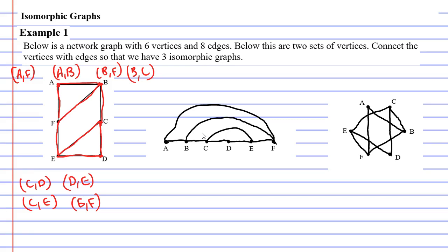We now have three isomorphic graphs but let's just double check this. First of all, we should have six vertices on all of them which is true, they all have six vertices. They also need to have eight edges. So I'm just going to count them.